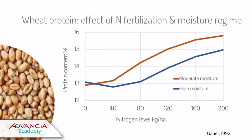Something well known is the effect of nitrogen fertilization on wheat protein content. Protein content grows in direct relation to nitrogen fertilization, but it is also linked to the moisture regime of the climate.